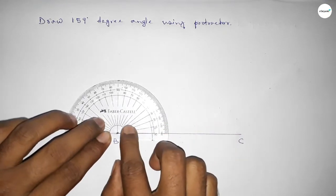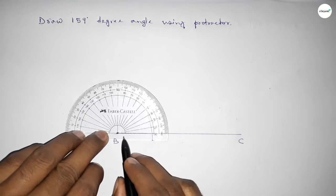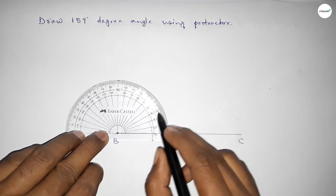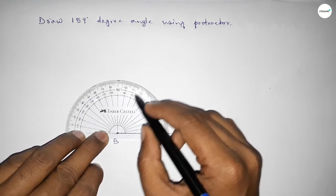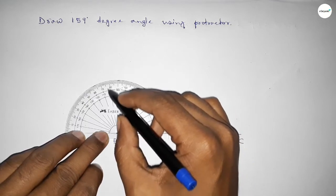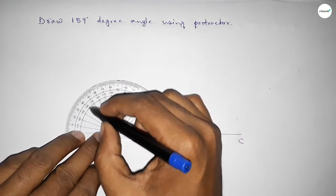So this is the starting angle: 0, 10, 20, 30, 40, 50, 60, 70, 80, 90, 100, 110, 120, 130, 140.